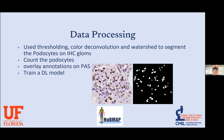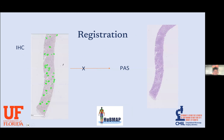Once I identified where the podocytes are on the IHC images, the next step was to overlay these annotations on the whole slide image and then onto the corresponding PAS image to create a ground truth for training my models. This was probably one of the hardest tasks — overlaying these images on top of each other — and it ended up failing, because the annotations shifted unevenly, making it very hard to find consistent x and y coordinates to shift them to.